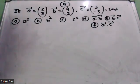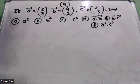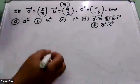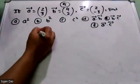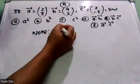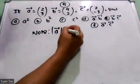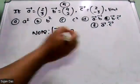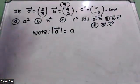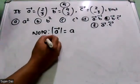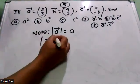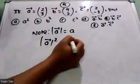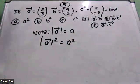So, we have vector A is given, vector B is given and vector C is given. Vector A is equal to A, magnitude square. A is equal to A, same, right?